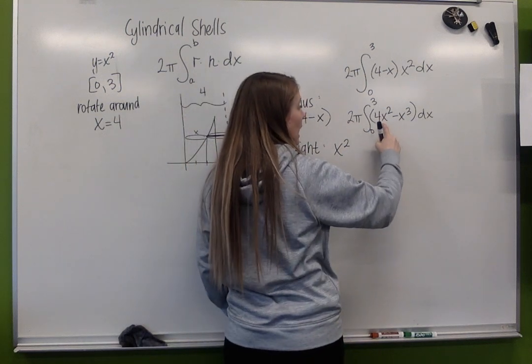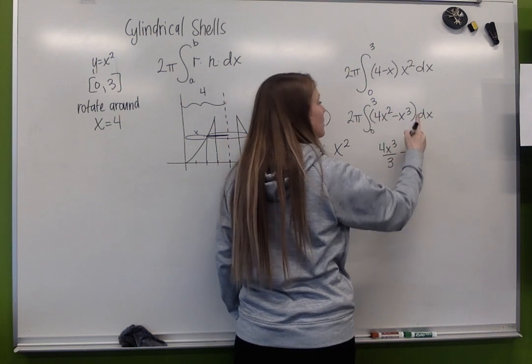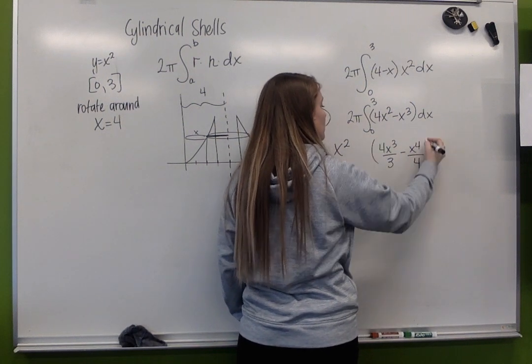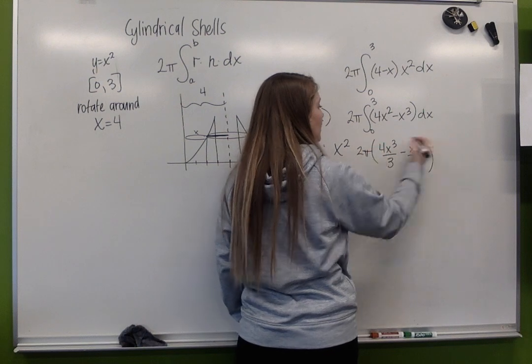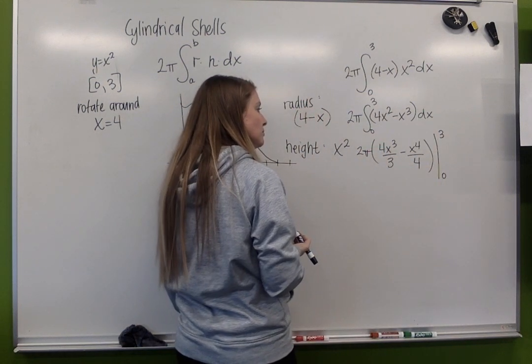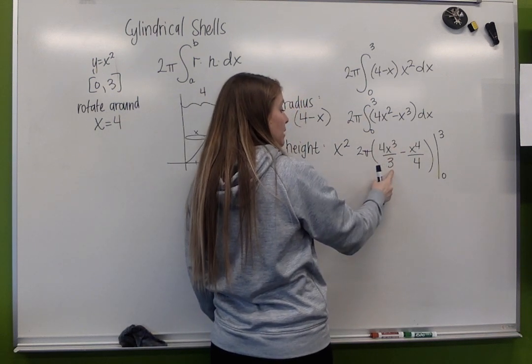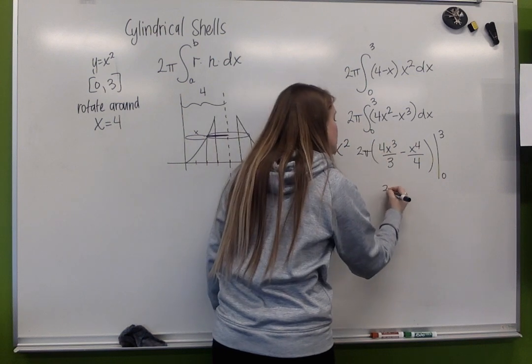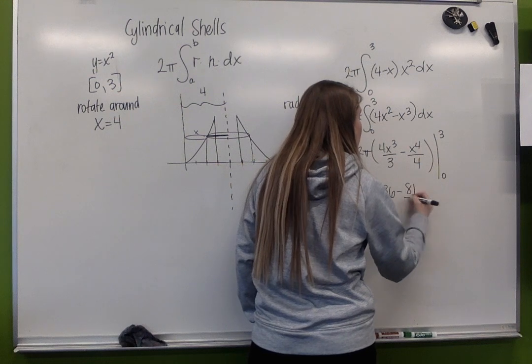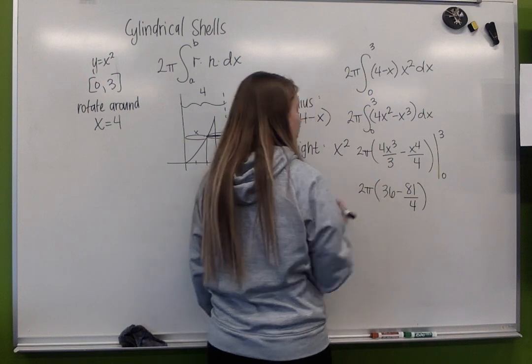So anti-derived 4 x squared, 4 x cubed over 3, anti-derived the x cubed. I'm going to get x to the 4th over 4, times 2 pi, evaluated from 0 to 3. So 3 cubed is 27, divided by 3 is 9, times 4 is 36. 3 to the 4th is 81 over 4, and I'm going to times that all by 2 pi.